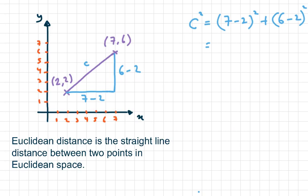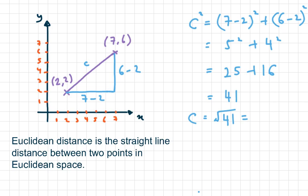This gives us 5 squared plus 4 squared, which is 25 plus 16, equaling 41. So c equals the square root of 41, which is approximately 6.403. This means the distance between point A and point B is 6.40. That is how you find your Euclidean distance.